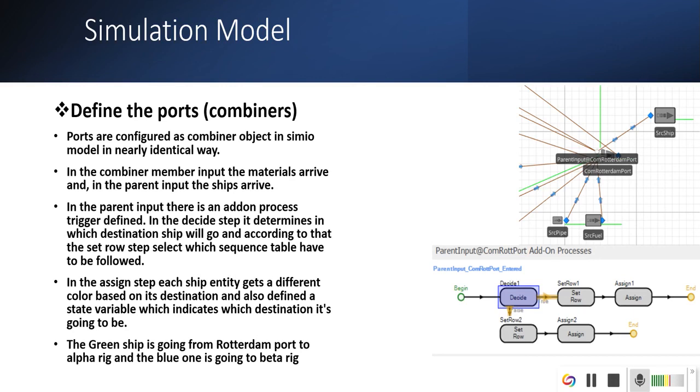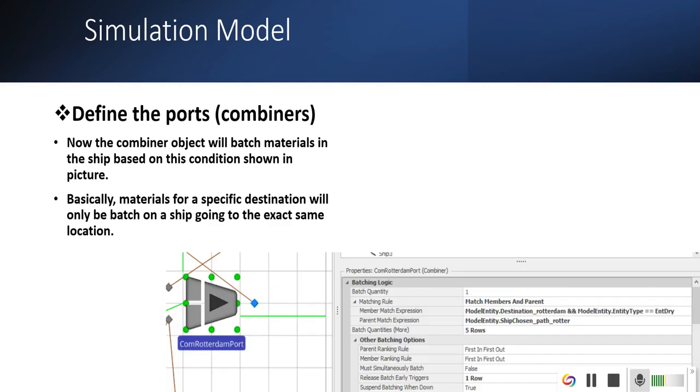The parent input add-on process. As soon as the ship enters the parent input, this is defined. For example, the green ship is going from the Rotterdam port to Alpha rig, and blue one is going to Beta.